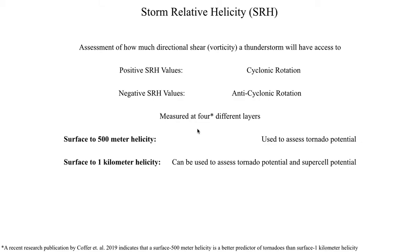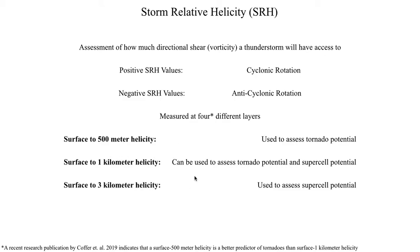Surface to one kilometer helicity was used before and can assess tornado potential, but it's not quite as effective as surface to 500 meter helicity. Surface to one kilometer helicity is now probably better used to assess the potential for supercells. Surface to three kilometer helicity, another commonly reported value, is primarily used to assess supercell potential. Tornadoes don't usually extend three kilometers into the atmosphere, so that deep a layer is not beneficial for forecasting tornadoes.